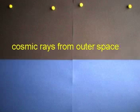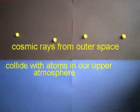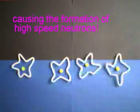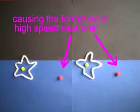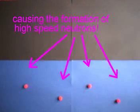Cosmic rays from outer space bombard Earth's upper atmosphere. When the cosmic rays collide with atoms in the upper atmosphere, they cause high-speed neutrons to be formed and released.